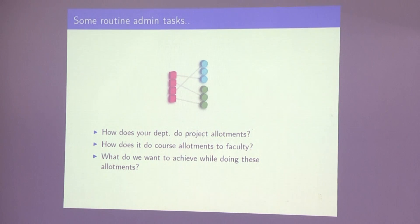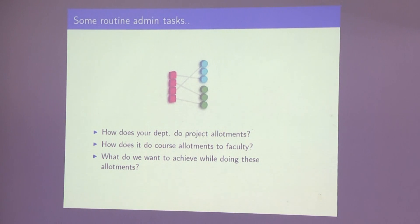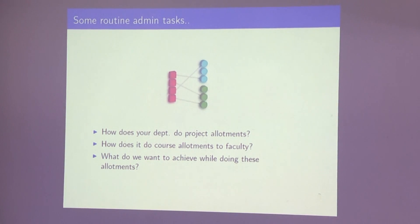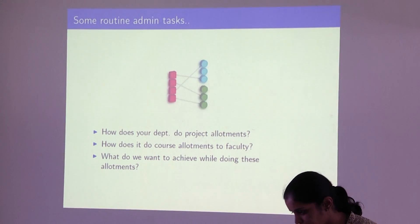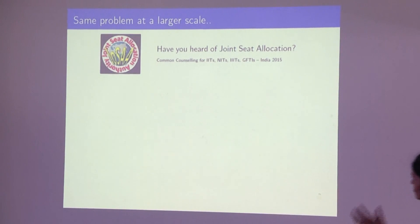Some small set of people sit down and do this allocation. With around 15 to 20 faculty members and 60 students, or around 30 groups if projects are done in pairs, you actually do this manually. This is one problem we will look at, but let's look at the same problem at a larger scale.